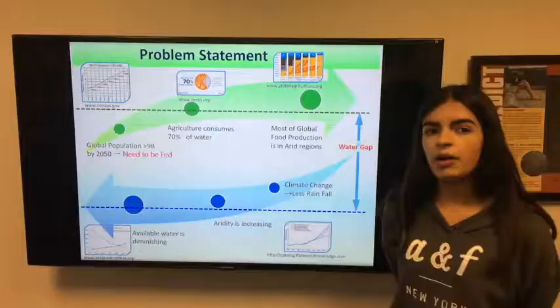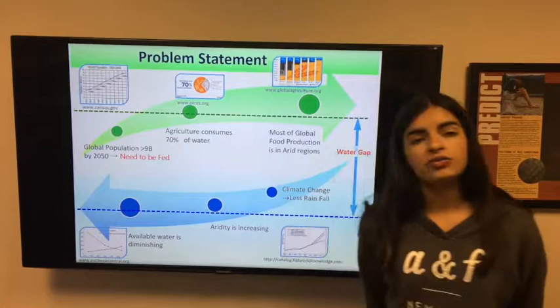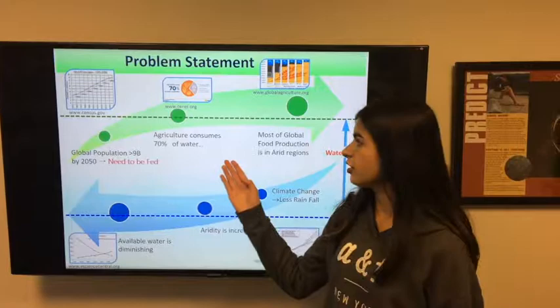Our problem statement is, by 2050, the population will be more than 9 billion and all these people need to be fed. Agriculture consumes 70% of water. Also, most of the global food production is done in arid regions.